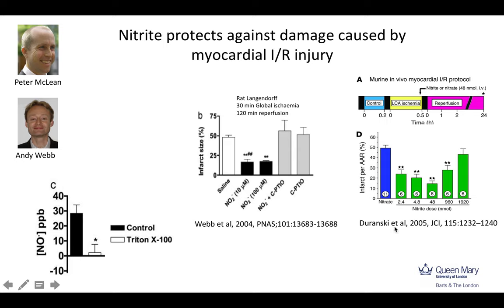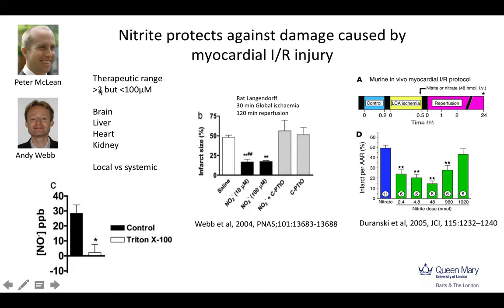Very soon after our paper was published, Mark Gladwin and David Lefer published their findings using an in vivo model of ischemia-reperfusion injury in mice, administering nitrite 30 minutes prior to reperfusion intraventricularly. They too showed that nitrite causes dose-dependent reduction of infarct size. Since those observations, numerous studies in various organs have shown that the efficacy of nitrite within the ischemia-reperfusion setting falls in a therapeutic range of somewhere between 3 and 100 micromolar. We start to lose the beneficial activity above these concentrations, and we don't see any cytoprotection at lower concentrations, but this activity can be evidenced in whatever organ is being subjected to an IR injury.